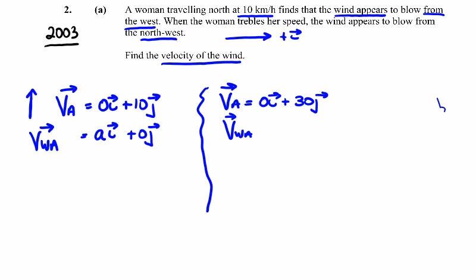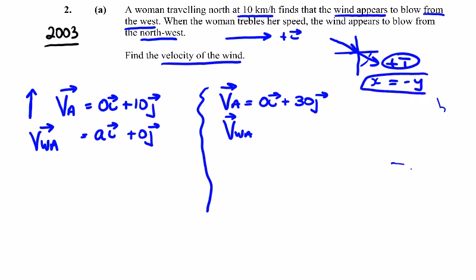The wind appears to blow from the northwest. From the northwest is in this direction here, going into the positive i, negative j sector. Because it's at 45 degrees, x will be equal to negative y. So we can call that x in the i direction and minus x in the j direction for the velocity of the wind relative to the woman.